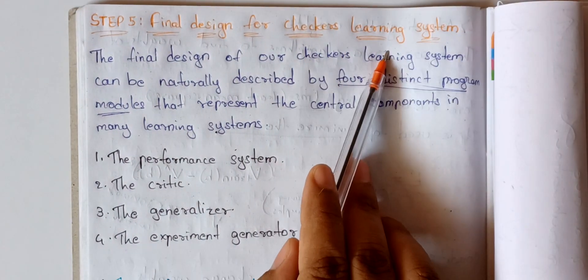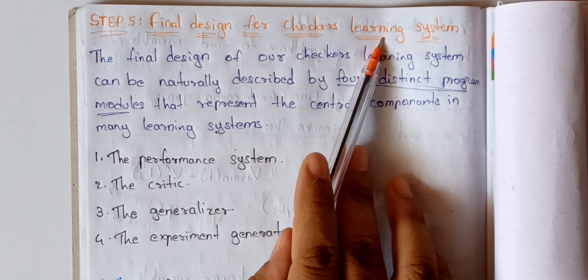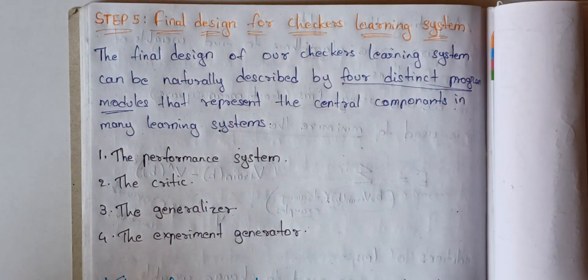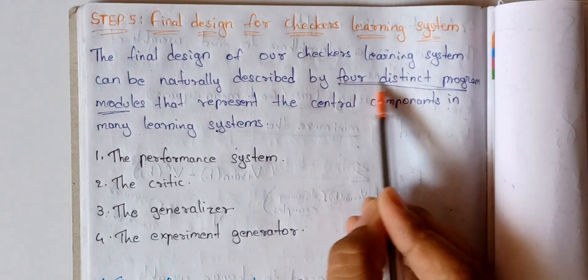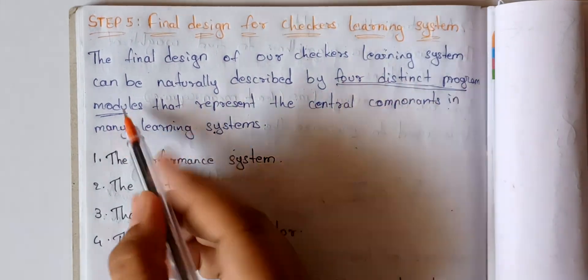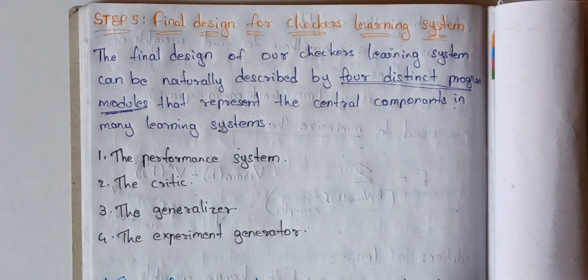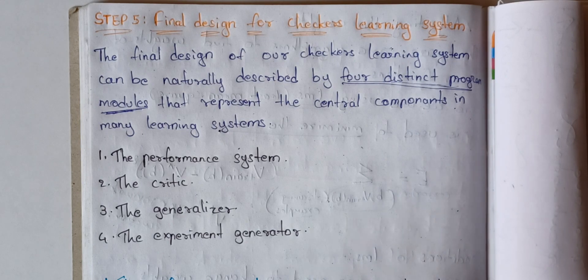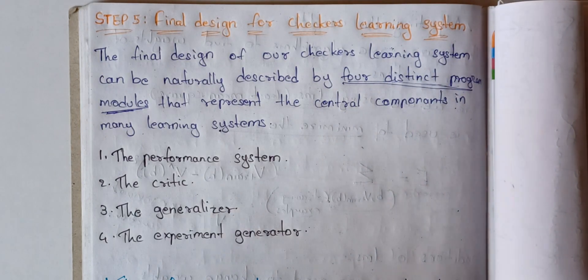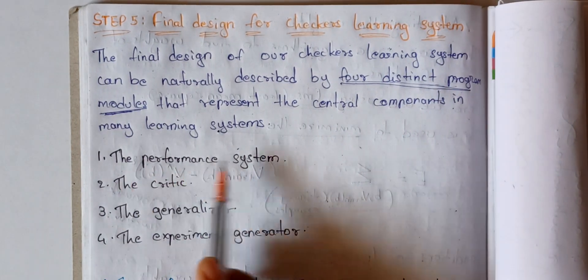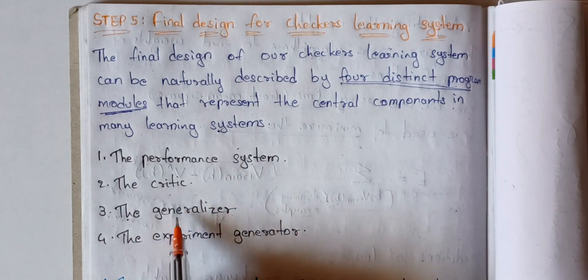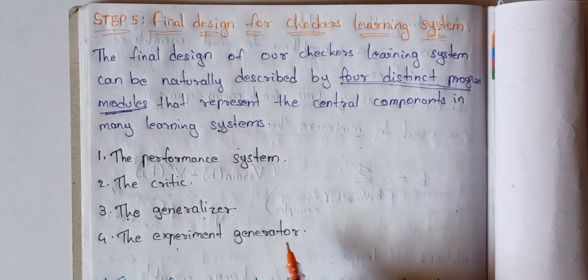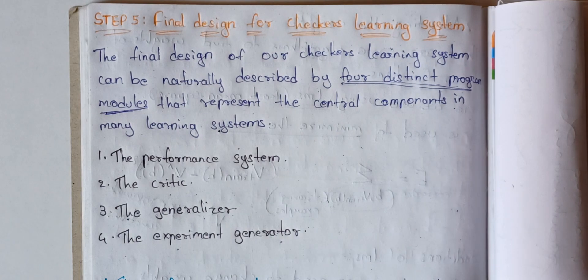A learning system — not just a checkers learning system, but anything like an automatic driving system — has four basic distinct program modules. These four steps are: the performance system, the critic, the generalizer, and the experiment generator.